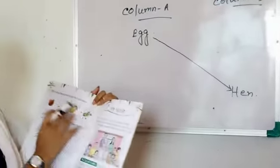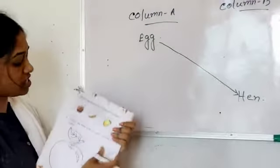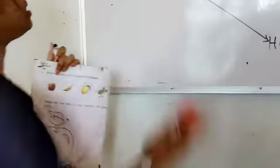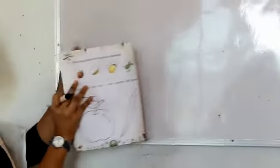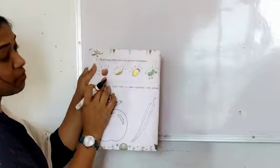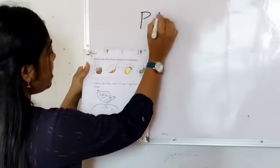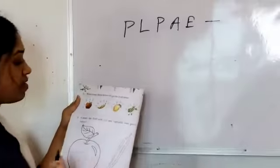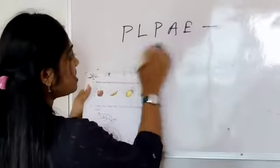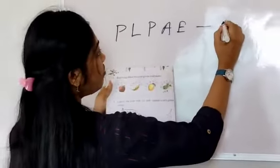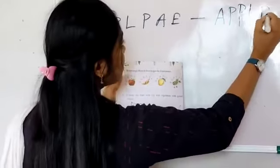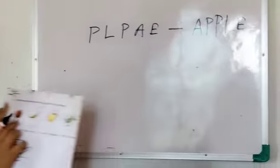Next exercise. Rearrange this letter to get the fruit's name. Number 2. Okay. See. Rearrange. This is very easy. First recognize the food by seeing the picture. Okay. P-L-T-A-E. What is the food's name? This is apple. Look at the picture and write the fruit's name. A-P-P-L-E. That is apple. Okay. Write apple here.